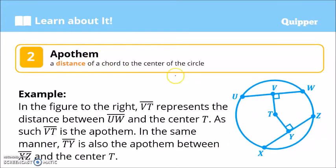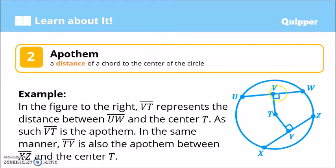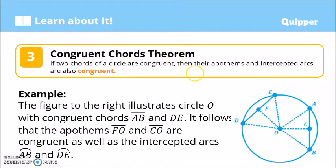We also have the apothem, which refers to the distance from a chord to the center of the circle. For example, in circle T with chord UW and chord XZ, the distance from point T to the chord is called the apothem. The distance from the center to each chord is an apothem.